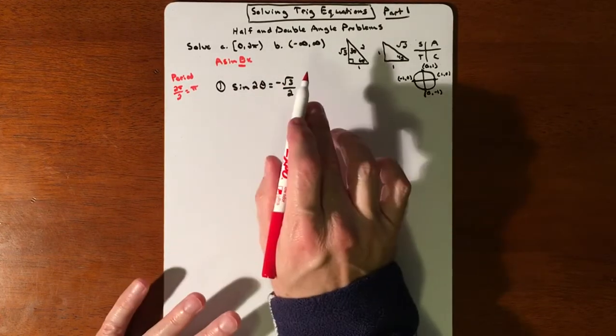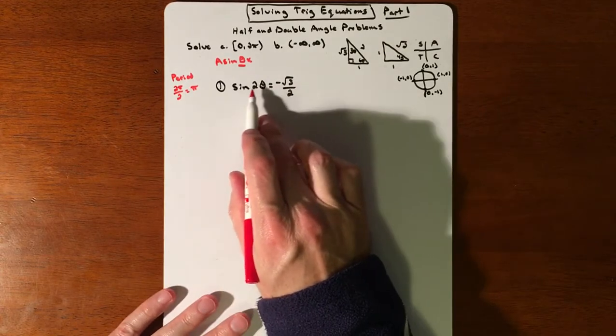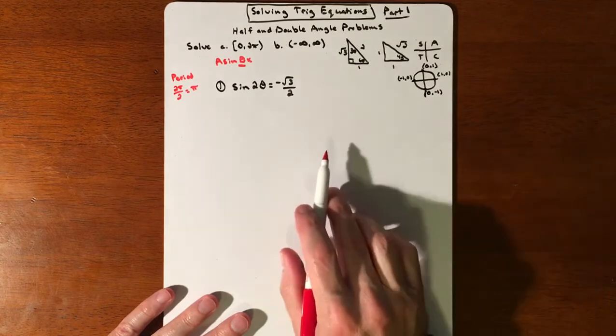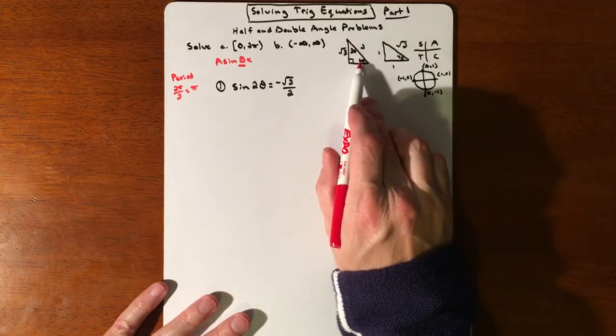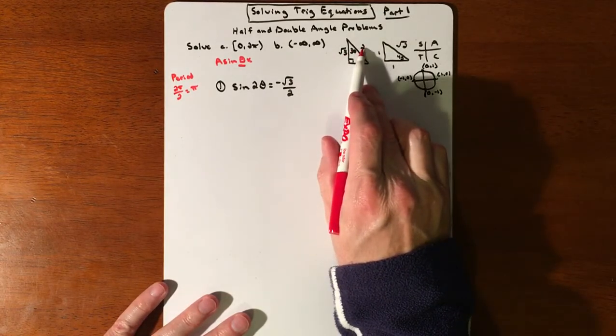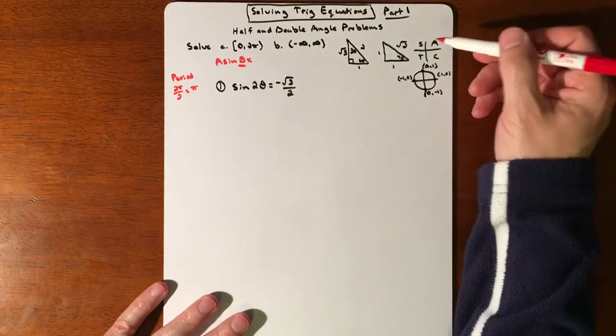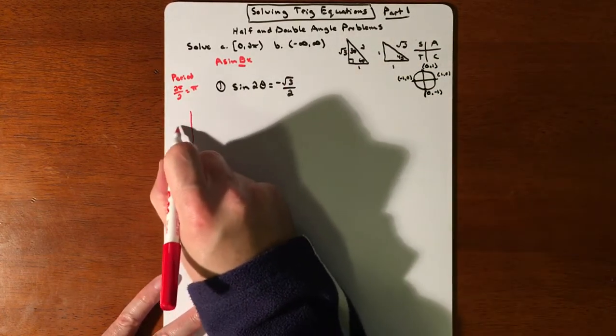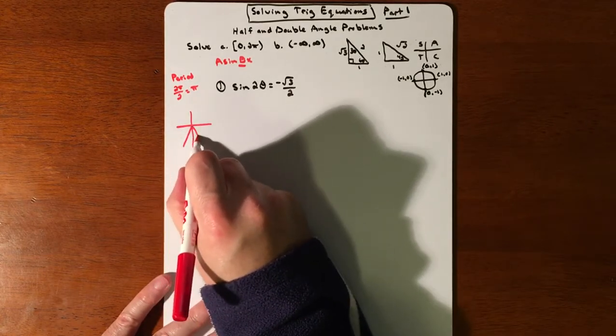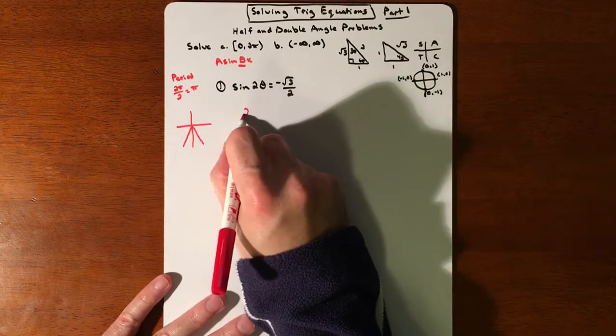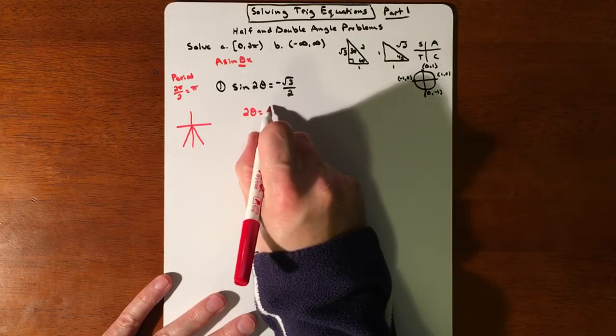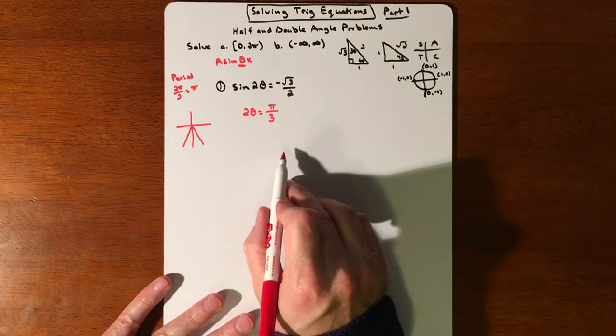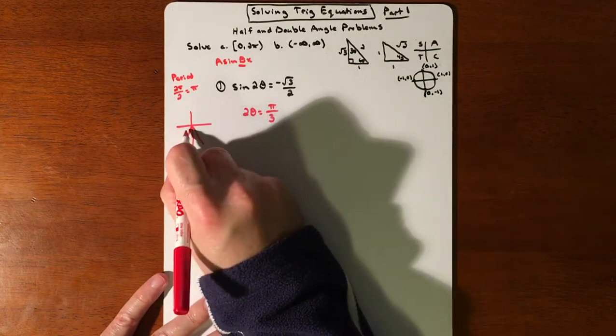So right now we don't worry about a thing. We're looking for sine of some angle is going to get us a negative √3/2. That's why our special triangles exist. So sine of 60 is going to get you √3/2. But we're talking about sine of 60 in... let's see. So sine is going to be negative down here and down here.